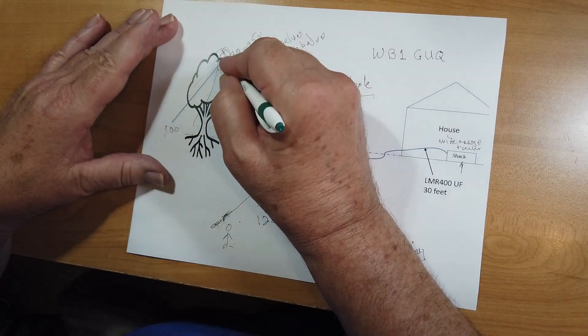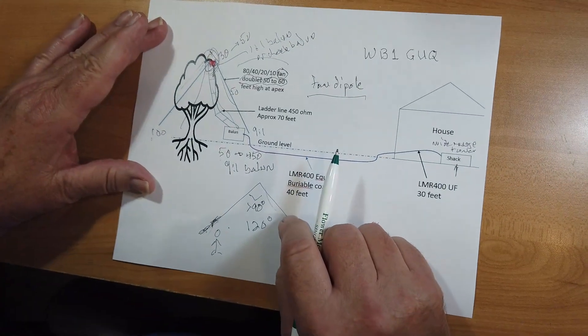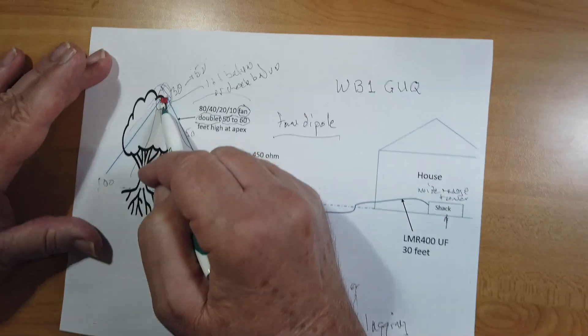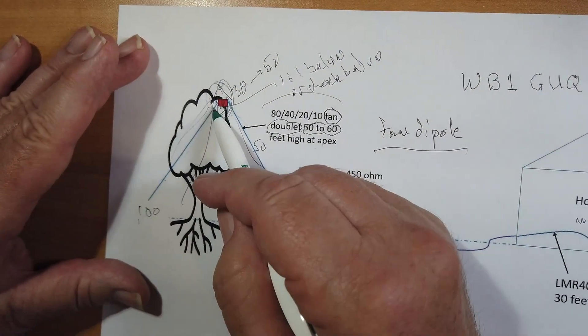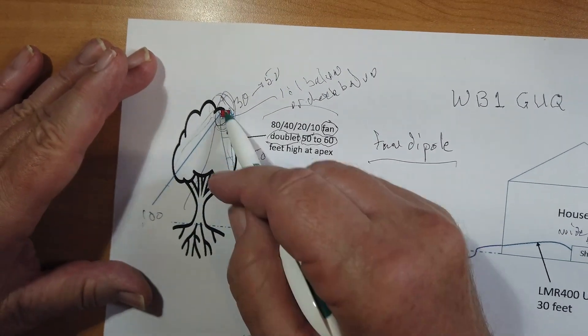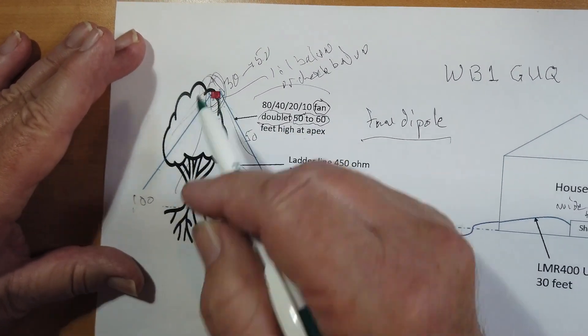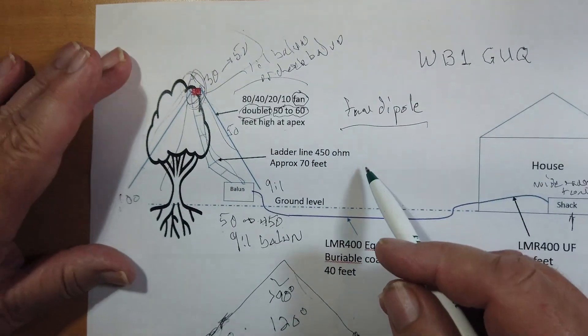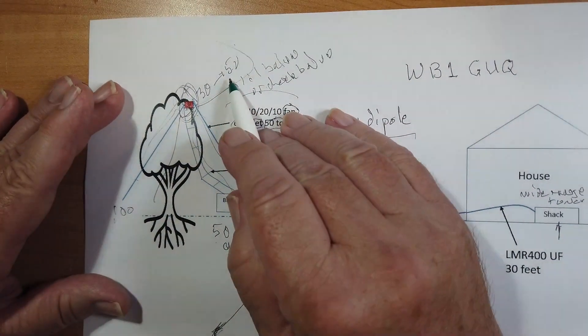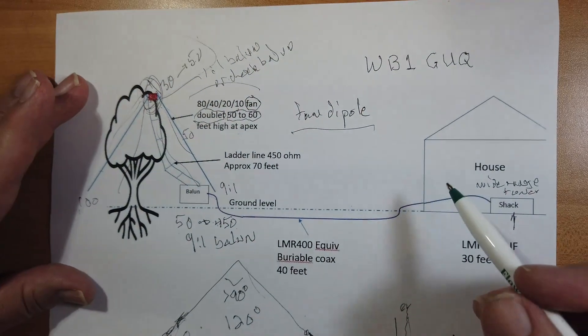Now, again, this is going to be a mismatch up here, because the impedance right there is 450 ohms for the ladder line, and you are matching that to what can be, if tuned, 30 to 75 ohm coax right there.